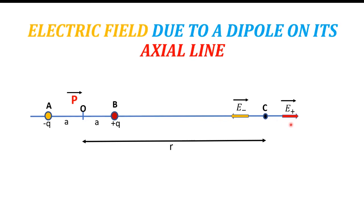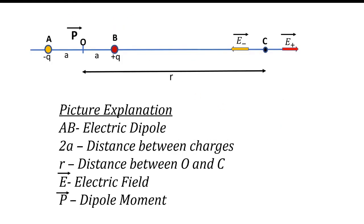This is an important 5-marks question asked in annual exams, so understand the concept carefully. First, we draw the picture, then give the picture explanation. The explanation includes: AB is the electric dipole, 2a is the distance between charges, r is the distance between O and C, E-vector is the electric field, and P-vector is the dipole moment.